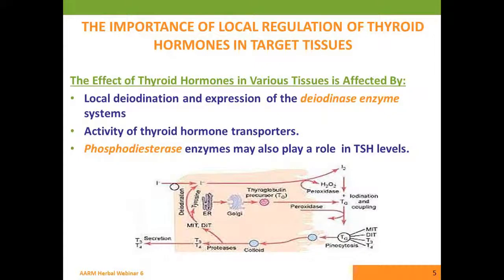The importance of local regulation of thyroid hormones in target tissues is obvious. So not only are we looking at pituitary competence or output of TSH and the thyroid's ability to produce thyroid hormones — or prevent excess thyroid hormones in the case of hyperthyroidism — but what happens downstream within different tissues, within different cells, at the level of the nuclear membrane and transducing that signal. And in the thyroid itself, this involves different enzyme systems, as the previous slide looked at.